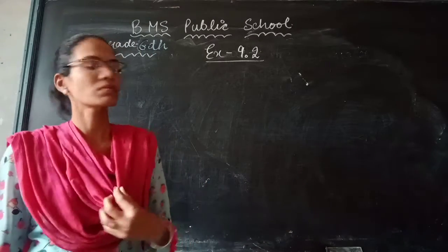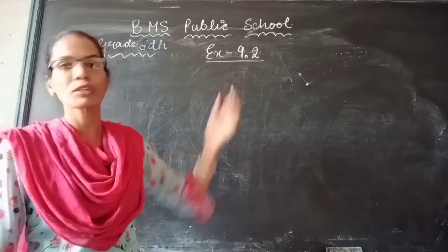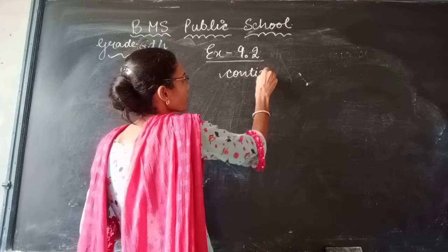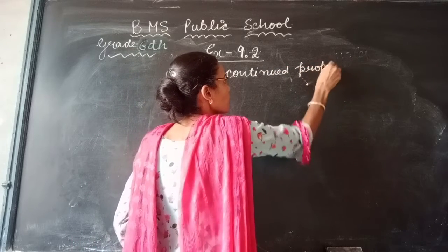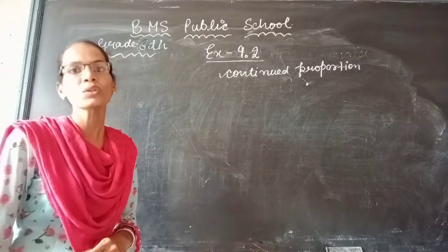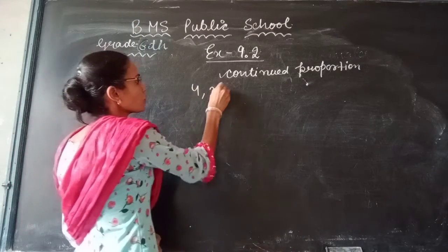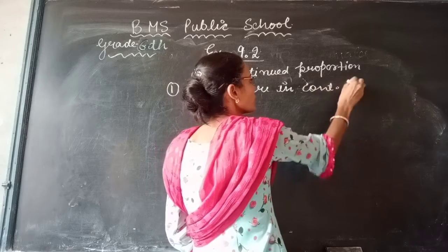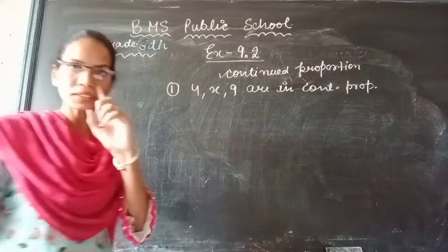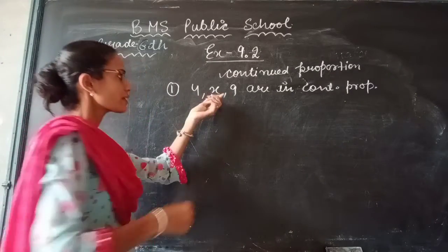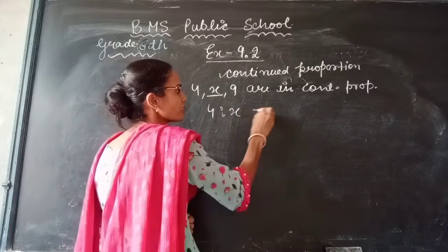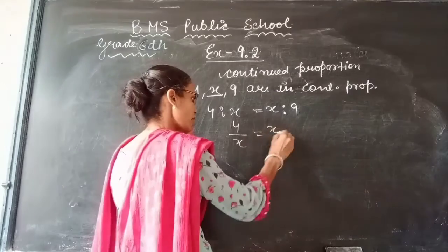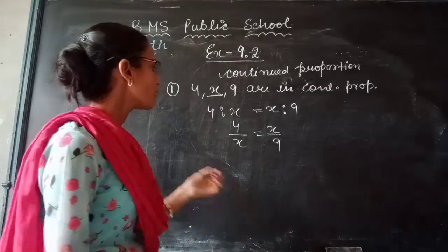Today we are going to start Exercise 9.2 from question number 6, and we are going to discuss continued proportion. If 4, x, and 9 are in continued proportion, continued proportion means the middle number repeats twice. So we write 4 ratio x equals x ratio 9, which gives us 4 by x equals x by 9.